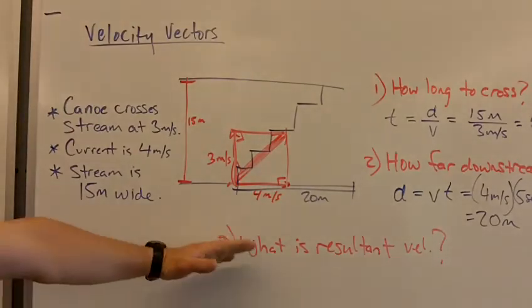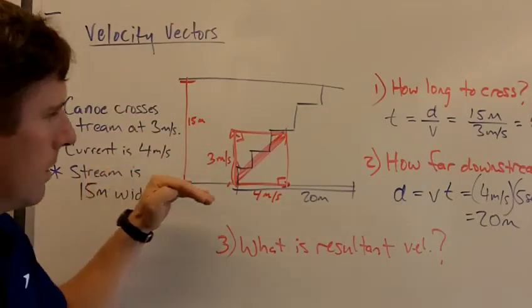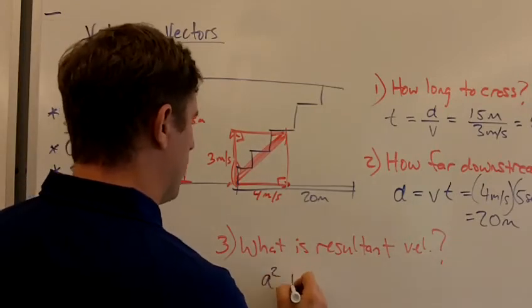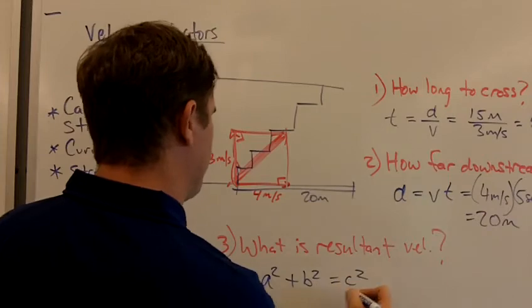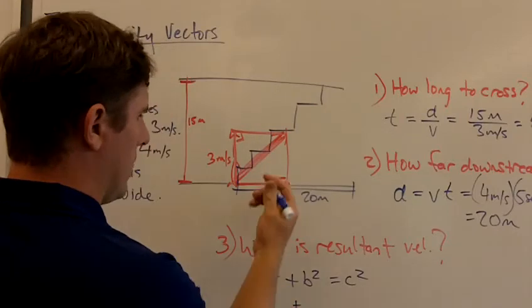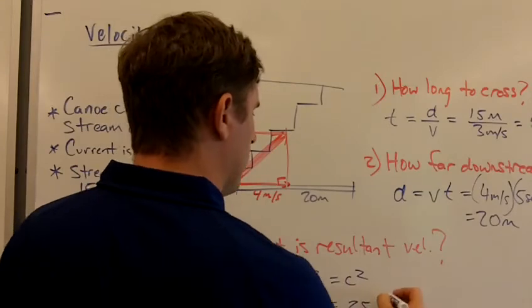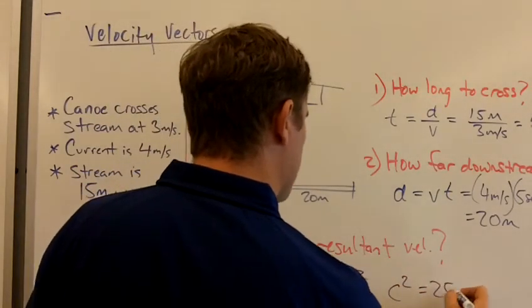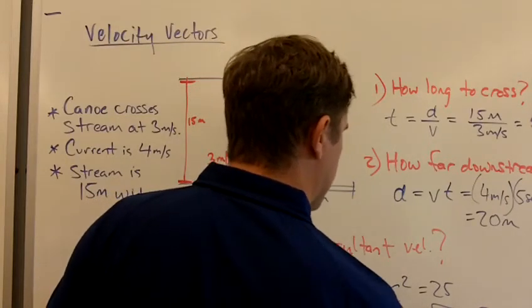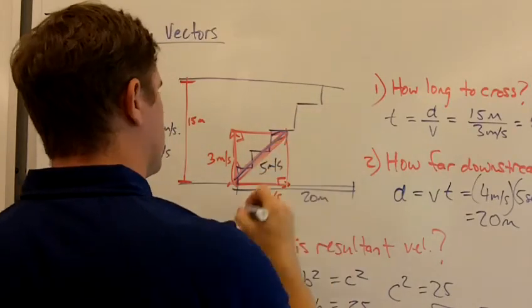Okay. How far downstream. And then lastly, what's the resultant velocity? If we paddle across the stream at three meters per second, but we drift downstream at four meters per second, what is our actual velocity? Well, here we would say a squared plus b squared equals c squared. A will say is three squared, which I'm just going to go ahead and say nine, because that's what three squared is. Four squared is 16 equals c squared, which is 25. If c squared is 25, that means c is going to be the square root of 25, which is five meters per second. And that's the resultant velocity right here. Five meters per second.